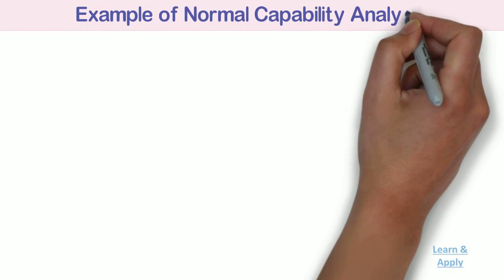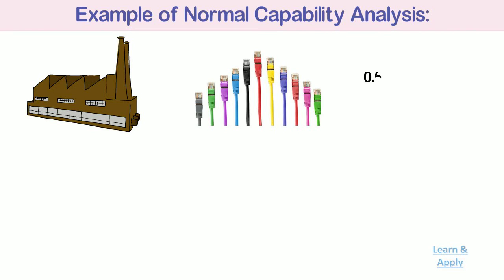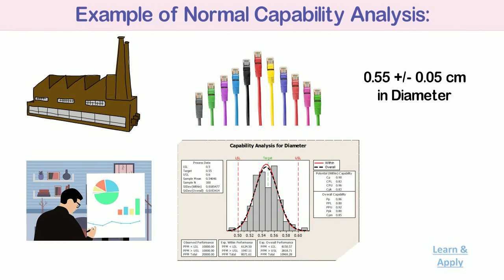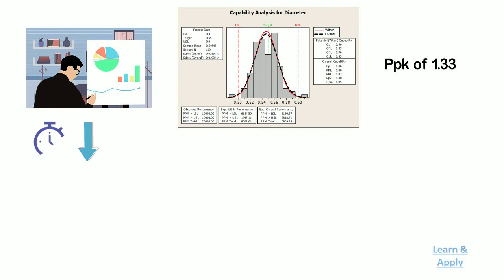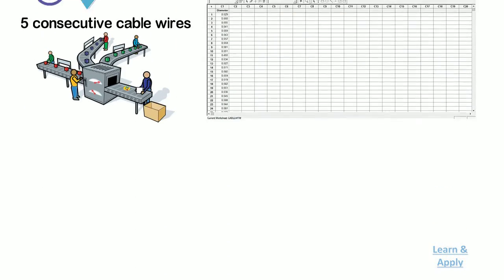Example of normal capability analysis: A manufacturer of cable wire wants to assess if the diameter of the cable meets specifications. A cable wire must be 0.55 plus or minus 0.05 cm in diameter to meet engineering specifications. Analysts evaluate the capability of the process to ensure it is meeting the customer requirement of a PPK of 1.33. Every hour, analysts take a subgroup of 5 consecutive cable wires from the production line and record the diameter in a worksheet. Before performing normal capability analysis, analysts confirm whether it is following a normal distribution by conducting a normality test.